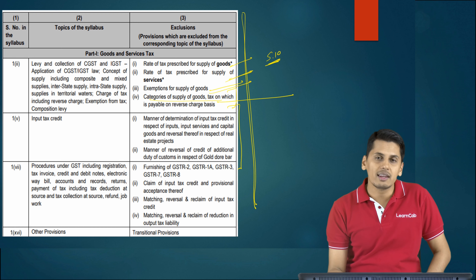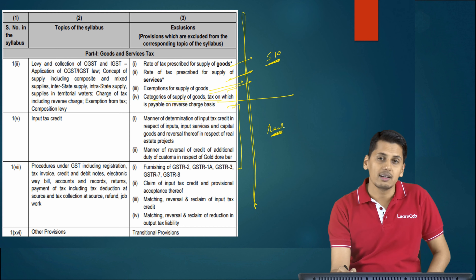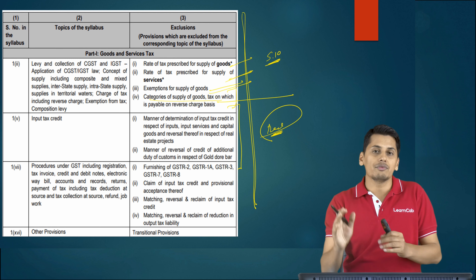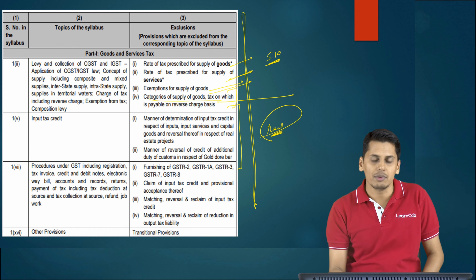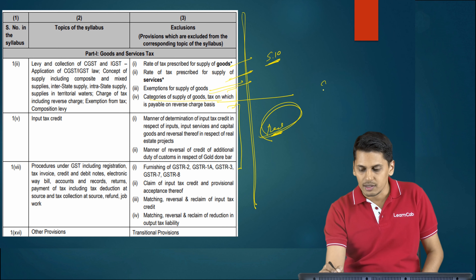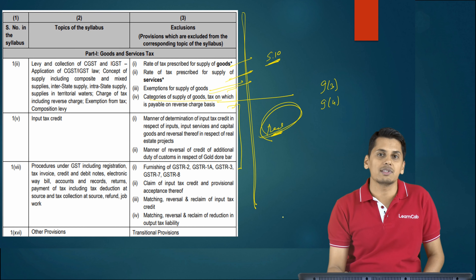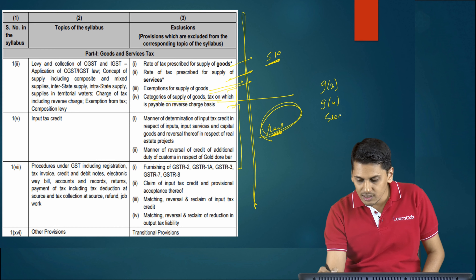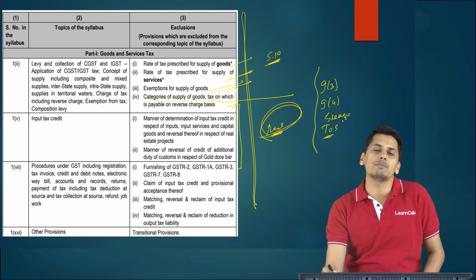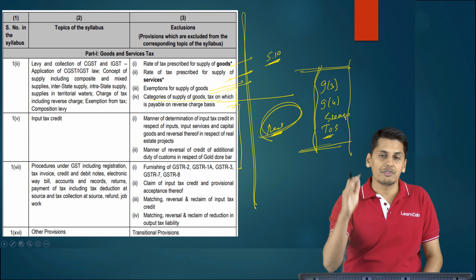Manner of determination and reversal of input tax credit regarding the real estate project is not applicable for your syllabus. Please understand — it is only the manner and determination of ITC which is not applicable. You have certain other areas concerning the real estate sector which are applicable: reverse charge mechanism under Section 9(3) and 9(4), certain exemptions in the real estate sector, and special provisions for time of supply for the real estate sector — all of these are still applicable and are new provisions.